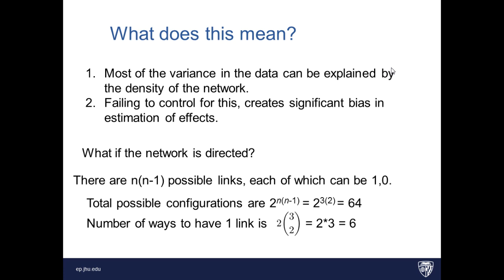or six of those 64 include only one directed link. So if we want to say, what is the probability that we are observing a link between a specific node i and node j, given that there is only one directed link in the network, that likelihood is one-sixth.